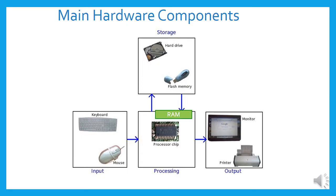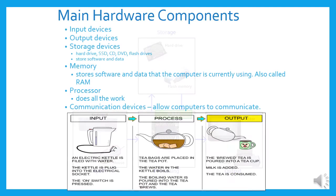There are places where you can permanently store data and programs. So we have the input devices, the output devices, storage devices — your hard drive, SSD, which is solid state drives, the more modern way to store data faster than a hard drive. Your CD, DVD, flash drives — these store software and data. In memory, it stores software and data that the computer is currently using. The memory we also call RAM. The processor is the part that does all the work.